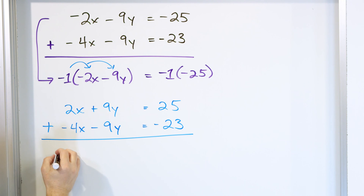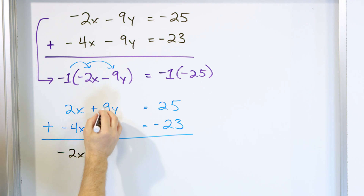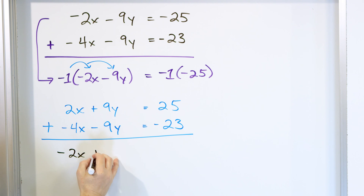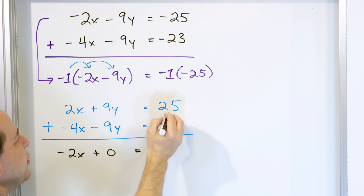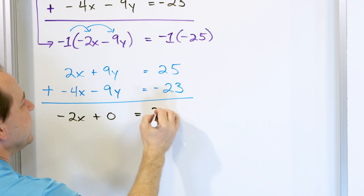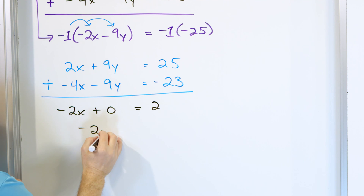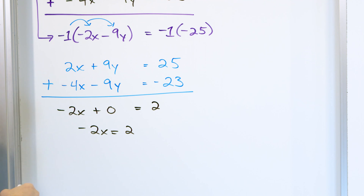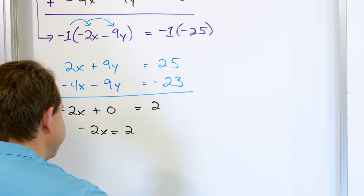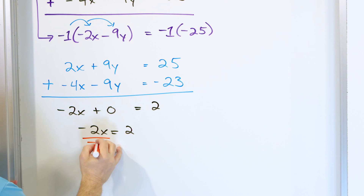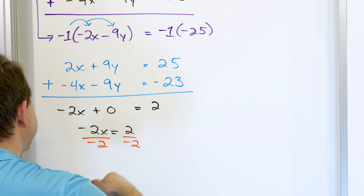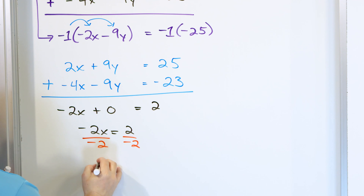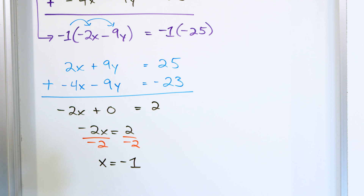So 2x plus negative 4x gives negative 2x. The y terms add to 0y. And on the right side, positive 25 plus negative 23 gives positive 2. So we have negative 2x equals 2. Dividing by negative 2, the 2s cancel and we get x equals negative 1.